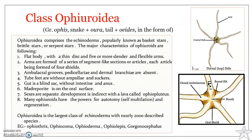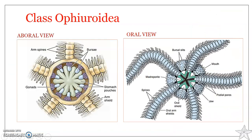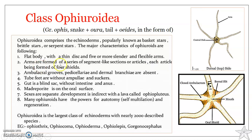Ophiuroids have a flat body with a thin disc and five or more slender flexible arms. The arms are formed of a series of segment-like sections, each section being formed of four plates. The figure shown here is the oral view, and the aboral disc wall has been cut away to show the internal structures.